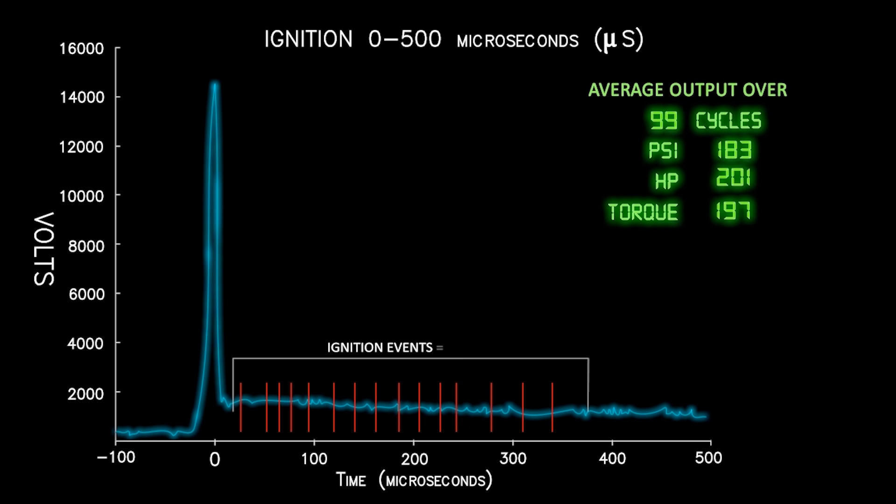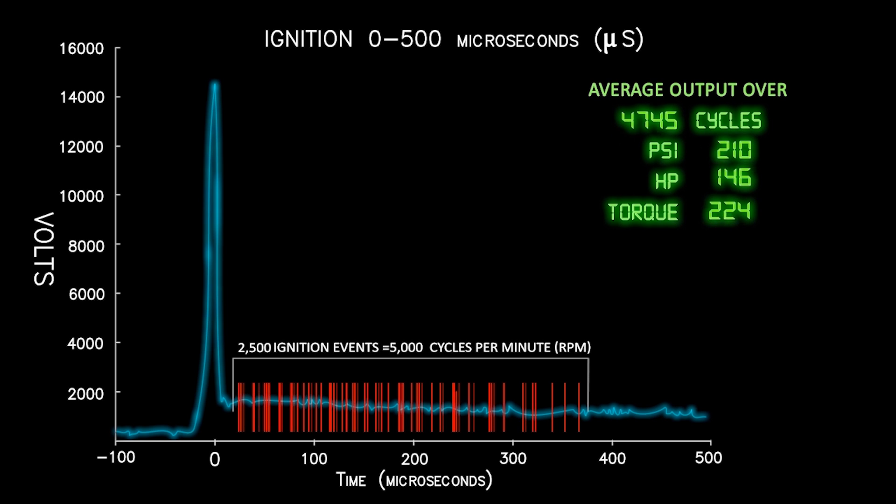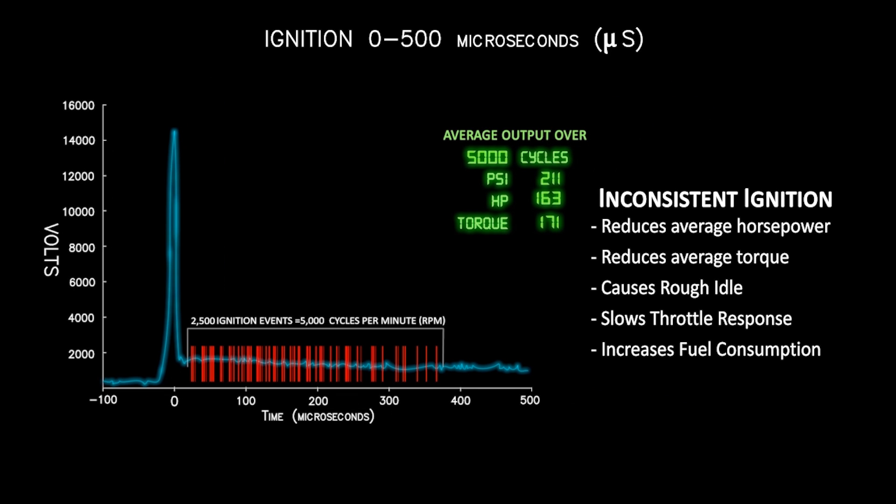At 5,000 RPM, the spark plug ignites the fuel 2,500 different times a minute, igniting at different times within the approximately 500 microseconds the spark is present. The inconsistency in ignition means your engine's average output suffers greatly.